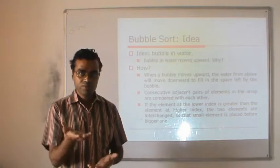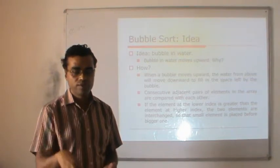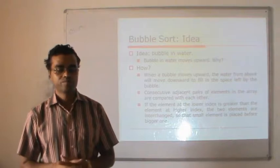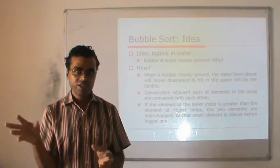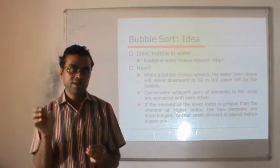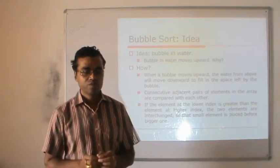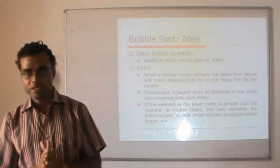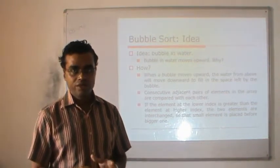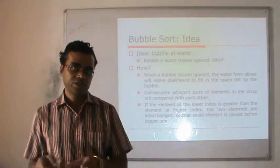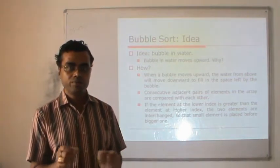In bubble sort, the same concept applies. As data moves in a particular direction, the other data comes to fill the space. Every consecutive pair of elements is compared, and if the data is not in order, we swap them. We compare from the first element to the end; if the value at a higher index is less than at a lower index, we interchange them to bring the smaller value to the lower index.